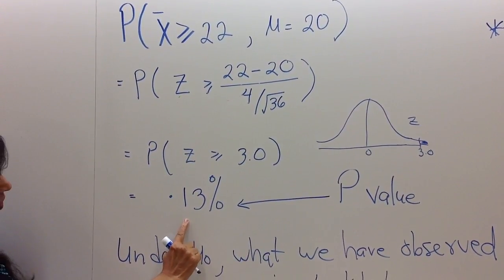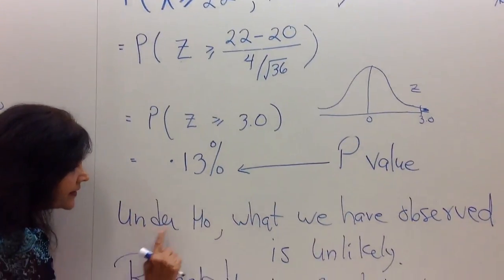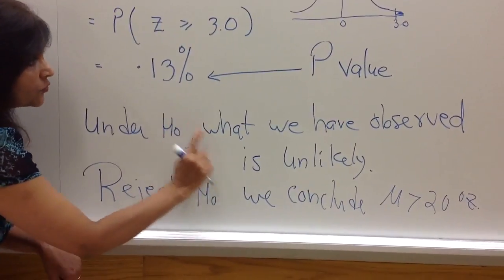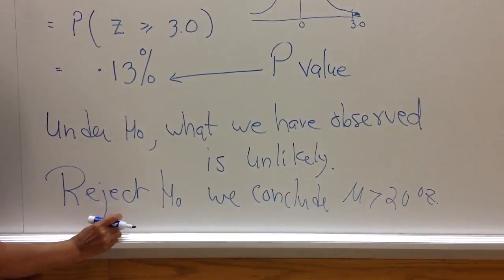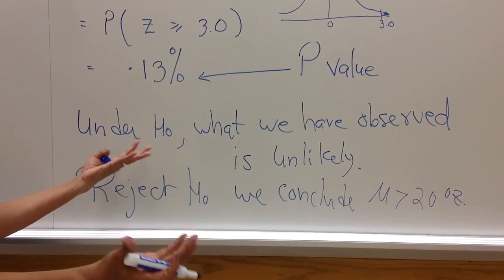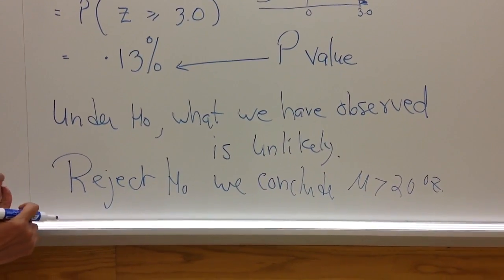So this probability is low. What does that mean? What it means is that under the null hypothesis, what we have observed is highly unlikely. That means null hypothesis and what we have observed, they don't match. One has to be incorrect.